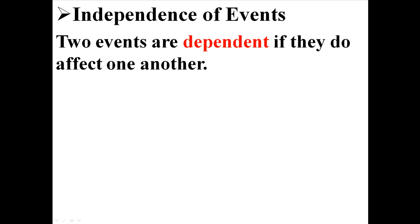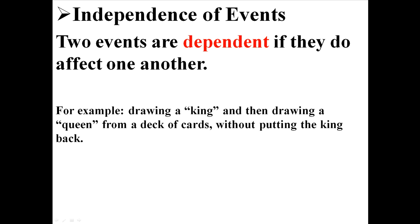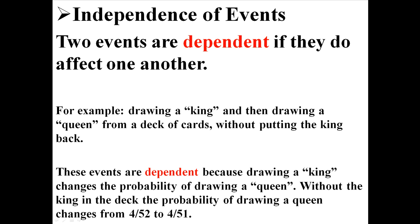Two events are dependent if they do affect one another. For example, drawing a king and then drawing a queen from a deck of cards without putting the king back. These events are dependent because drawing the king will change the probability of drawing a queen. Without the king in the deck, the probability of drawing a queen changes from 4 out of 52 to 4 out of 51. Taking one card out of the deck changes the probability of another event because there are now fewer cards in the deck, which is why these are dependent events.